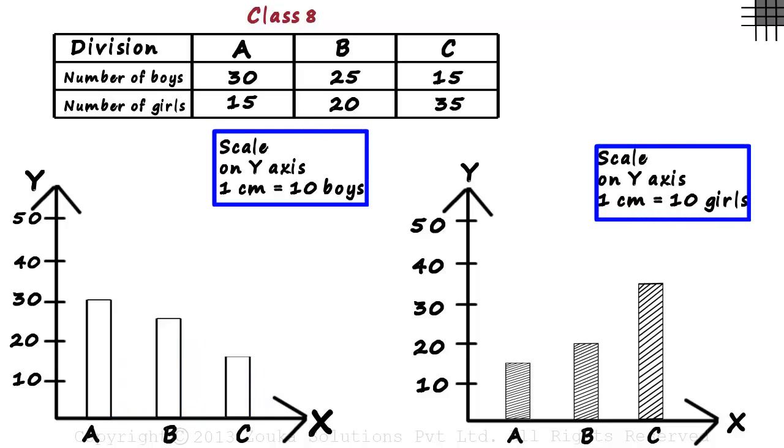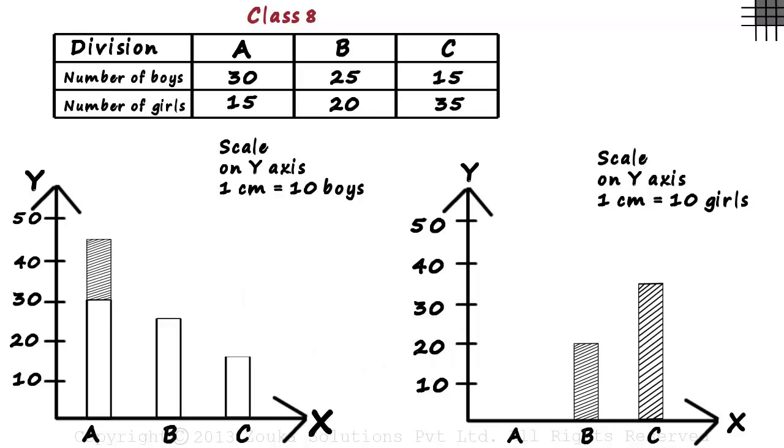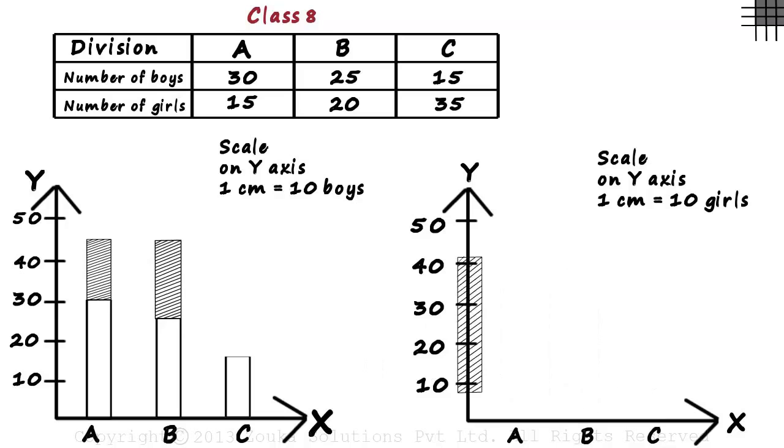As the scale is the same, we can just place these bars on top of these bars. Division A on A, B on B and C on C. Now we have just one bar graph.